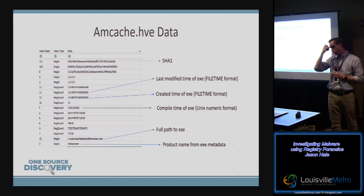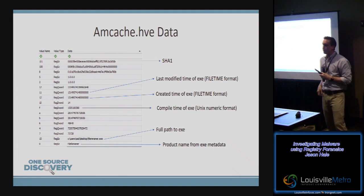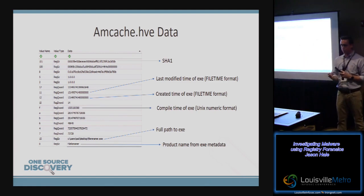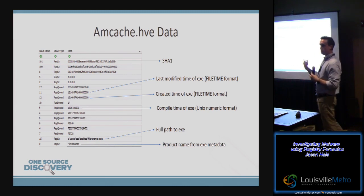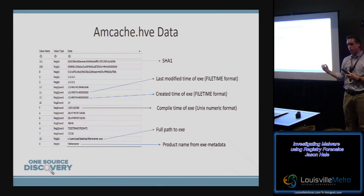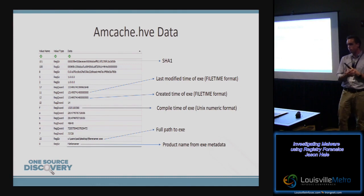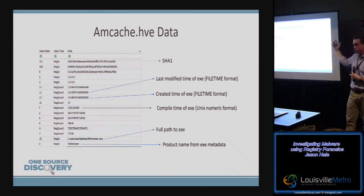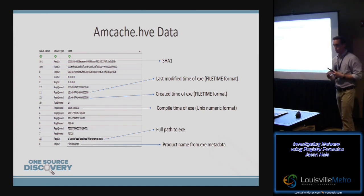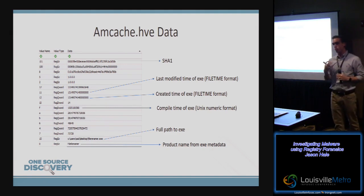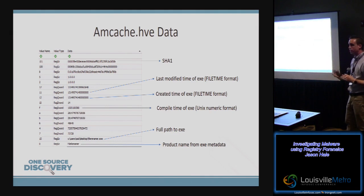One more thing about AMCache: one of the really neat things it allows you to do is determine executables that arrived on your system as a result of program installation. When you install Microsoft Office or any large application, there are multiple executables dumped on your system. Analyzing AMCache lets you determine which executables exist as a result of some MSI installation versus which ones you have no idea how they got there — maybe they're in a random directory. This can dramatically reduce the amount of data you're looking at and the time it takes to analyze the system.